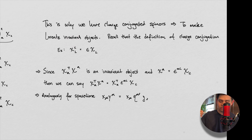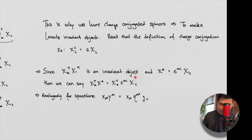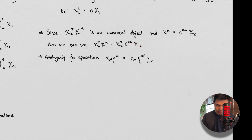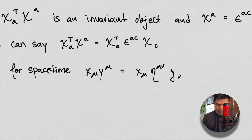Recall that the definition of charge conjugation is this expression. Since this expression is an invariant object, and this equals this, we could say that we have this expression here. The two C indices match, so we're just looking at this expression — and that's this result.